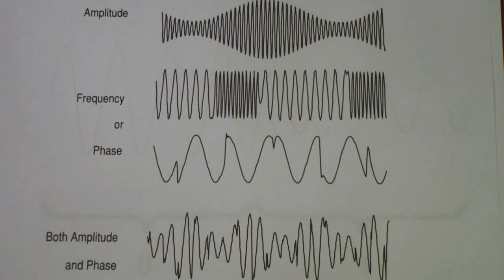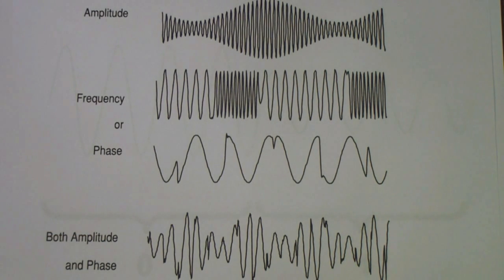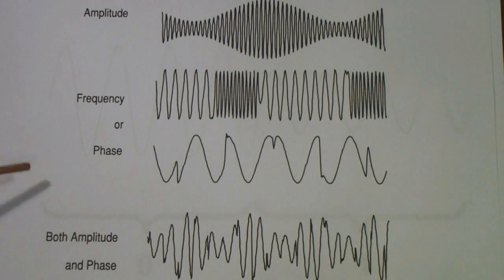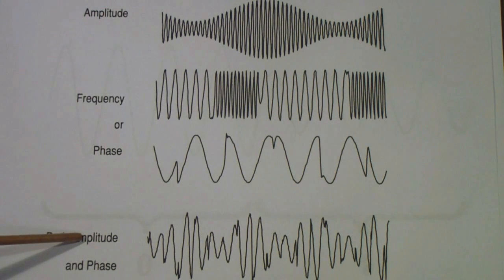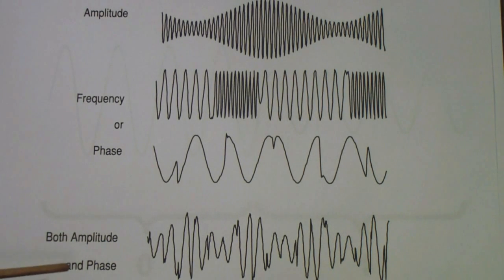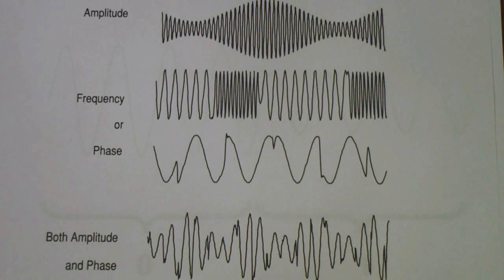A technique used a lot today is to combine both amplitude and phase modulation. The reason is that when you run out of steam with phase modulation in a channel, you can gain some extra communications capability by introducing limited amplitude changes. We'll talk about that when we get to QAM—Quadrature Amplitude Modulation—which is actually a combination of phase modulation and amplitude modulation.